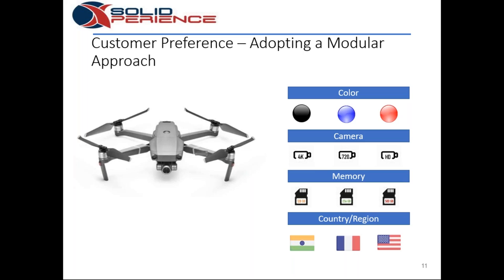Let's get into the example. We're still working with the drone, tasked with making this drone. We've decided to offer different choices: different color choices — black, blue, red; different camera options — 4K, HD, lower-resolution 720p; different storage options; and we're offering this across different regions and countries. We know what we want to build and all the things we want to offer. Traditionally, how would you go about doing it? Traditionally you'd say, let's build them one at a time — a customer orders a specific configuration, so we create that grouping.